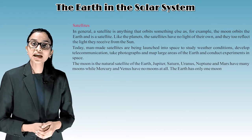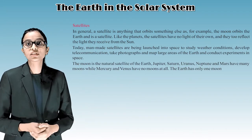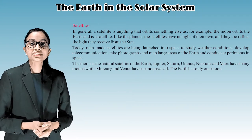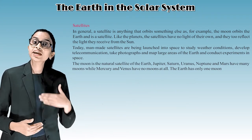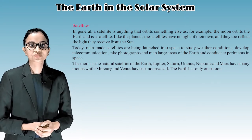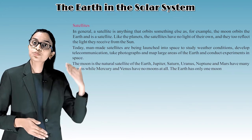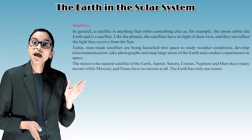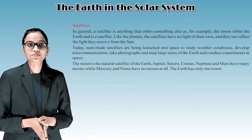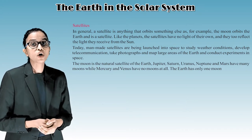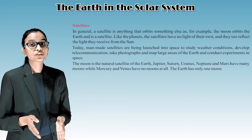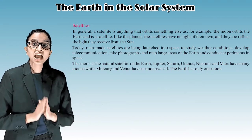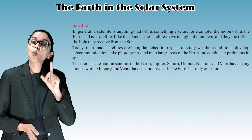Satellites. In general, a satellite is anything that orbits something else, as for example, the moon orbits the Earth and is a satellite. Like the planets, the satellites have no light of their own and they too reflect the light they receive from the sun. Today, man-made satellites are being launched into space to study weather conditions, develop telecommunication, take photographs, and map large areas of the Earth and conduct experiments in space. The moon is the natural satellite of the Earth. Jupiter, Saturn, Uranus, Neptune, and Mars have many moons, while Mercury and Venus have no moons at all. The Earth has only one moon.